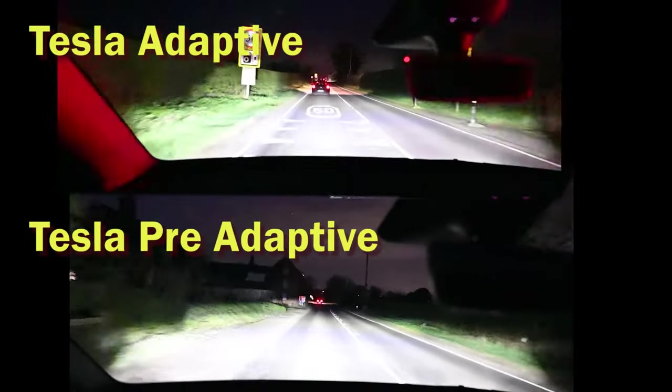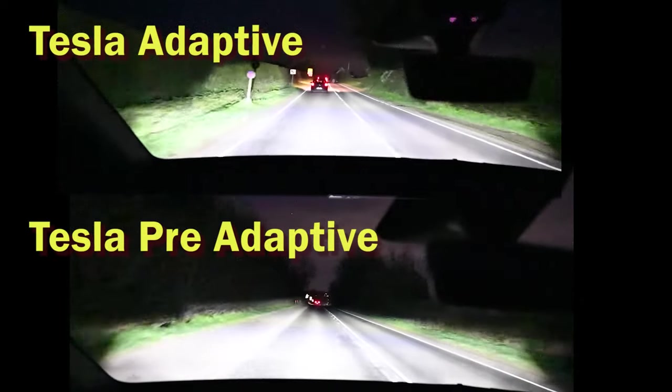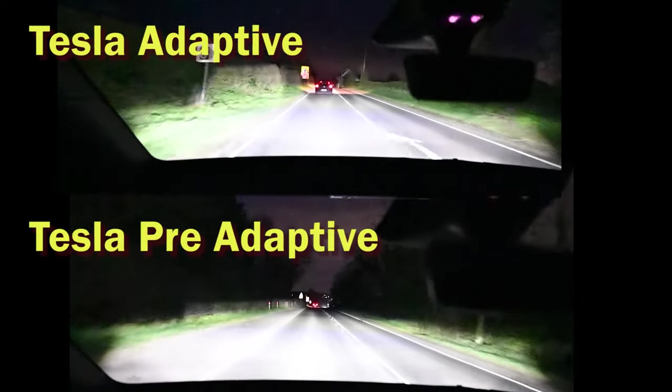The adaptive headlights do actually seem to turn back on the full beam reasonably quickly, much more quickly than the pre-adaptive headlights would re-enable.